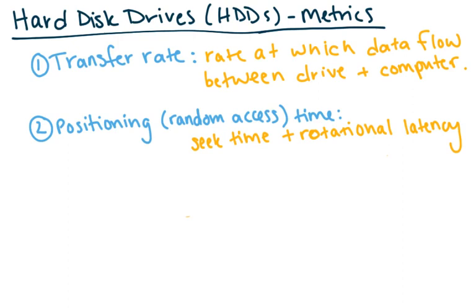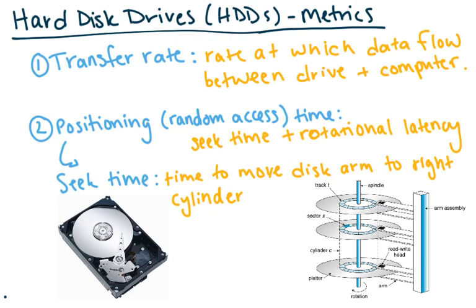Some metrics we look at for hard disk drives: the first is the transfer rate — the rate at which data flows between the drive and the computer, which varies between hard drives. The second is positioning or random access time, which is the seek time plus the rotational latency. The seek time is the time to move the disk arm to the right cylinder — this movement from left to right.